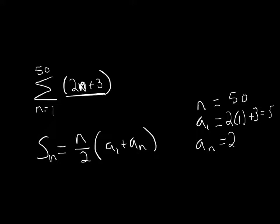And then I go to the upper limit to find my a sub 50, a sub n. So I replace n with 50, times it by 2 and add 3. That's going to give me 103. And now I just use this formula.